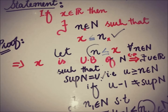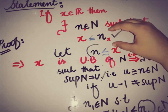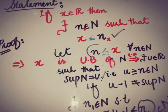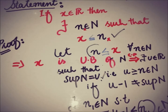So we have proved the Archimedean property using proof by contradiction, by taking our assumption as false and showing that it leads to a contradiction with the definition of supremum. This is how we prove the Archimedean property. Please look for more such videos and subscribe to this channel to watch upcoming videos. We will meet in the next video — till then, take care.